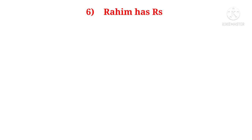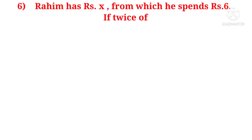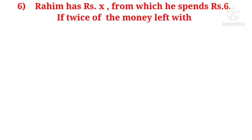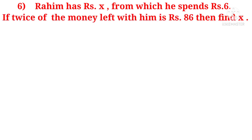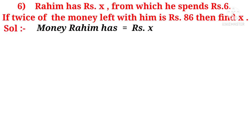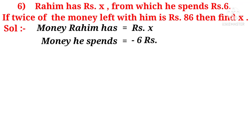Rahim has X rupees from which he spends 6 rupees. If twice of the money left with him is 86 rupees, then find X. Solution: money Rahim has is equal to X rupees. Observe the word 'spends' — it indicates minus. So, minus 6 rupees, a negative number.